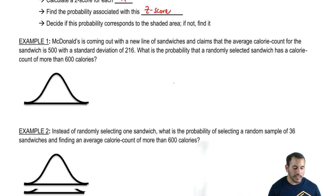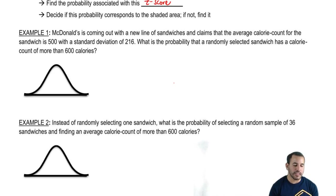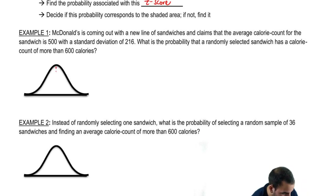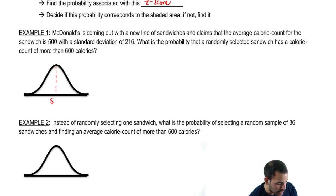McDonald's is coming out with a new line of sandwiches and claims the average calorie count for the sandwich is 500 with a standard deviation of 216. What is the probability that a randomly selected sandwich has a calorie count of more than 600 calories? Let's get our midpoint — they said the average was 500, which is still the same average we're dealing with when talking about a sampling distribution for the mean.